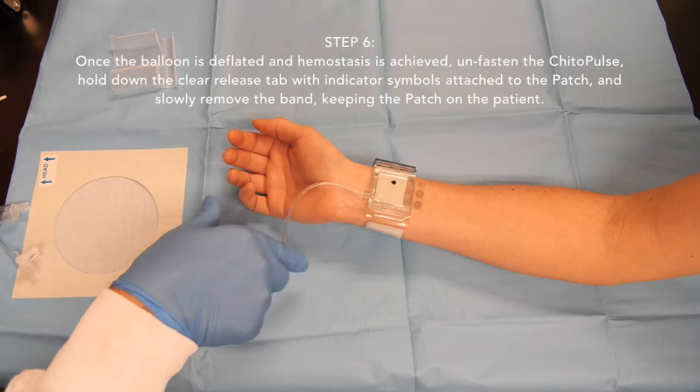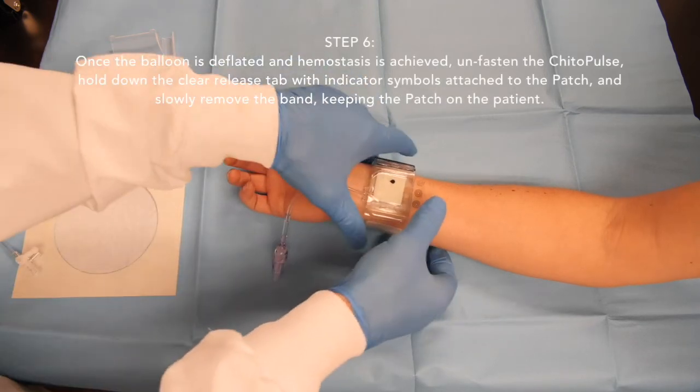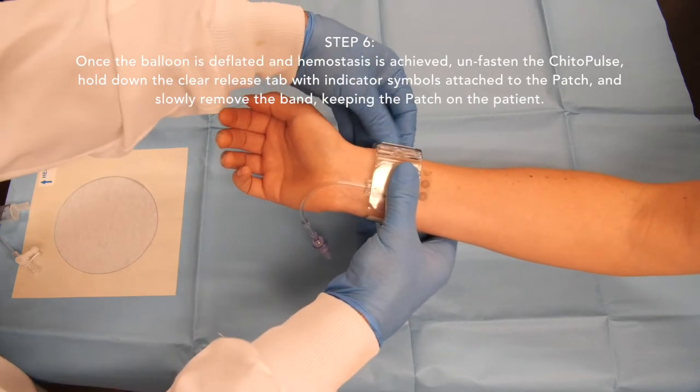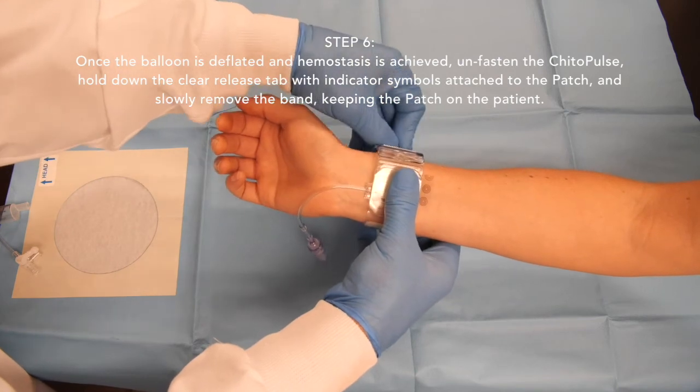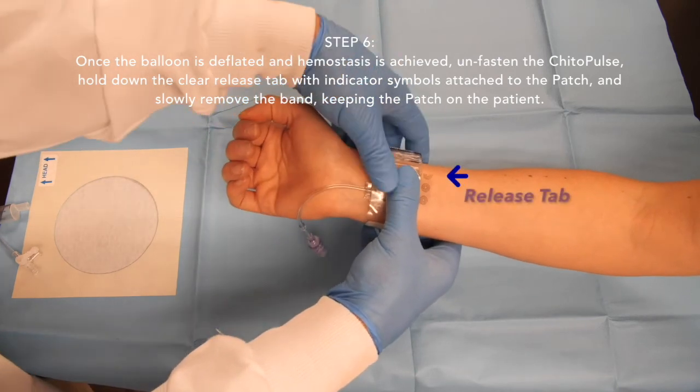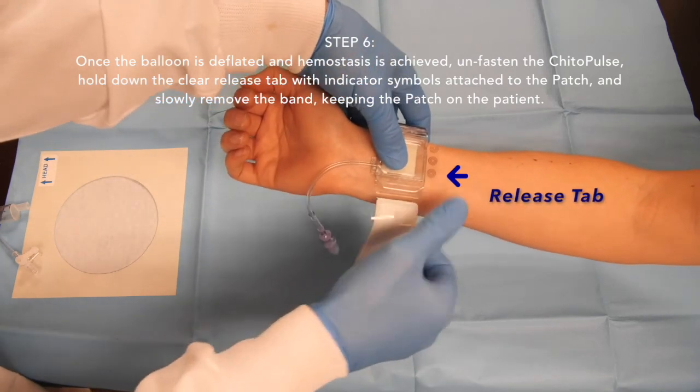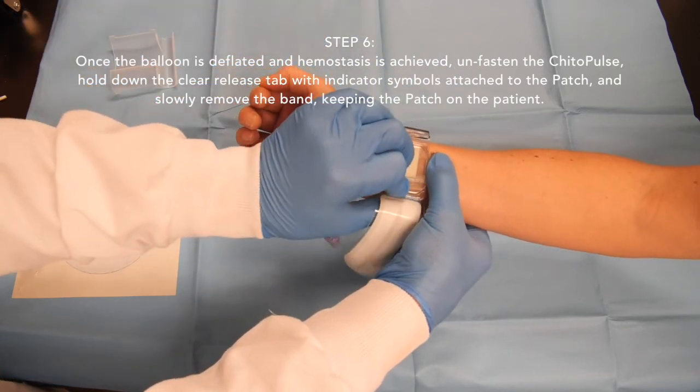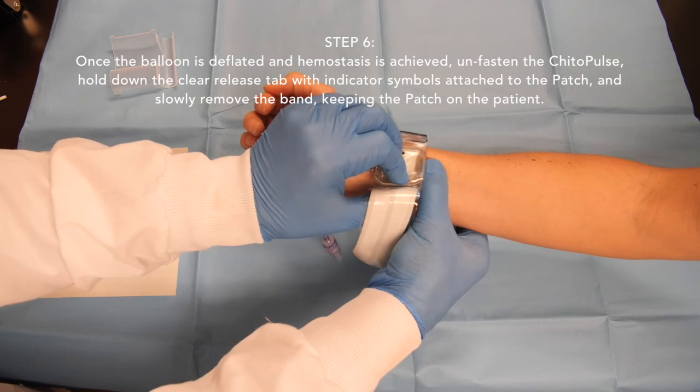Once the balloon is deflated and hemostasis is achieved, unfasten the ChitoPulse. Hold down the clear release tab with indicator symbols attached to the patch and slowly remove the band, keeping the patch on the patient.